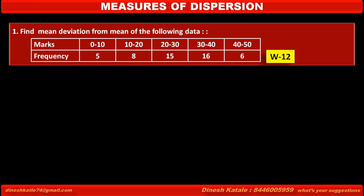Problem: find the mean deviation from mean of the following data. Marks are given in class intervals: 0 to 10, 10 to 20, 20 to 30, 30 to 40, 40 to 50. Their corresponding frequencies are given as 5, 8, 15, 16, 6.